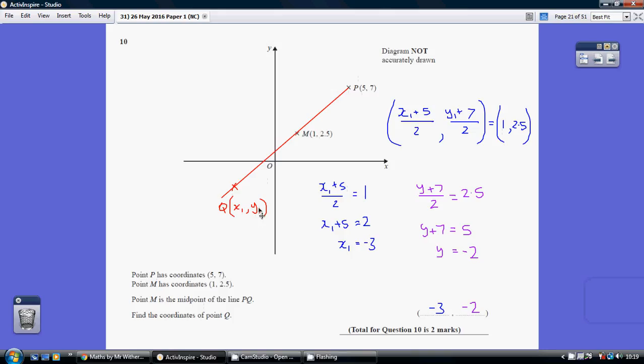Similarly, looking at the y-coordinate, 7 plus whatever y1 is, and then halved, its average, equals 2.5. So 7 plus y1, I'll have to call it y here, but same thing, y1. 7 plus y1 divided by 2, halving it, gives me 2.5. So I've really just got to sort out these two little equations here.